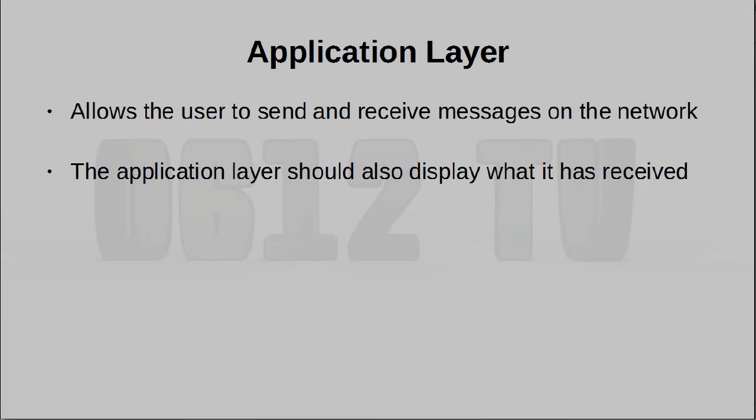And finally, right at the very top, layer number seven, the application layer. Simply put, that is the application which the user is using to communicate on the network. The role of this particular layer varies from program to program, but the idea is it needs to allow the user to both send and receive things from the network.